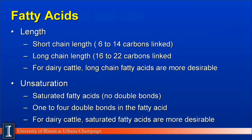The second way to categorize fatty acids is on the degree of unsaturation. A saturated fatty acid are basically those that have double bonds between the carbon molecules. Fatty acids can vary from one to four double bonds, which is the characteristic of that fatty acid which makes it very healthy for us humans. For dairy cattle, saturated fatty acids are more desirable than unsaturated fatty acids up to a point. If it is too saturated, they decrease in digestibility.